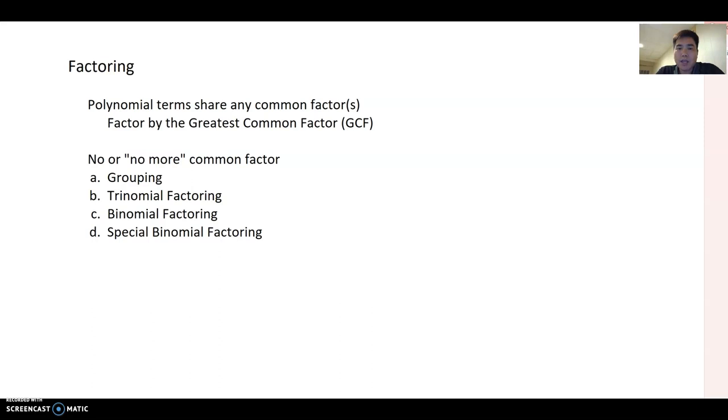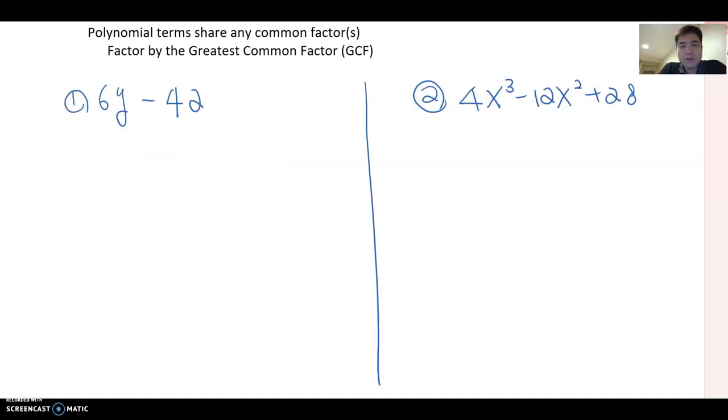And then if time allows us to cover more, then I can cover maybe grouping or other methods as well. So let's look at these first two questions. Number one: 6y minus 42.